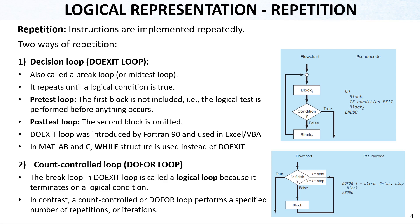These two loop types are important when we have a repeatedly calculated problem. For example, in our parachutist problem, we increase time from 0 to 12 with two-second time increments, repeating the same calculation each time. If we know the number of time increments, we can use do-for. Or if we define a condition — until the time is greater than, for example, 12 seconds — we continue repeating the calculations, making it a do-exit or while loop in MATLAB.